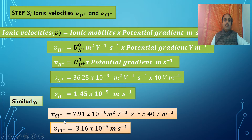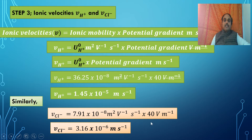The velocity of the Cl⁻ ion is calculated using its ionic mobility of 7.91 × 10⁻⁸ meter² per volt per second multiplied by the potential gradient, giving 3.16 × 10⁻⁶ meter per second.